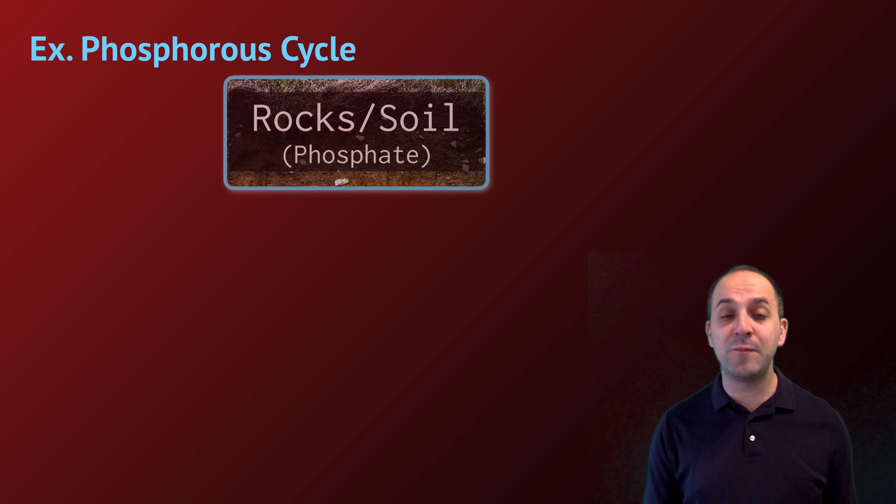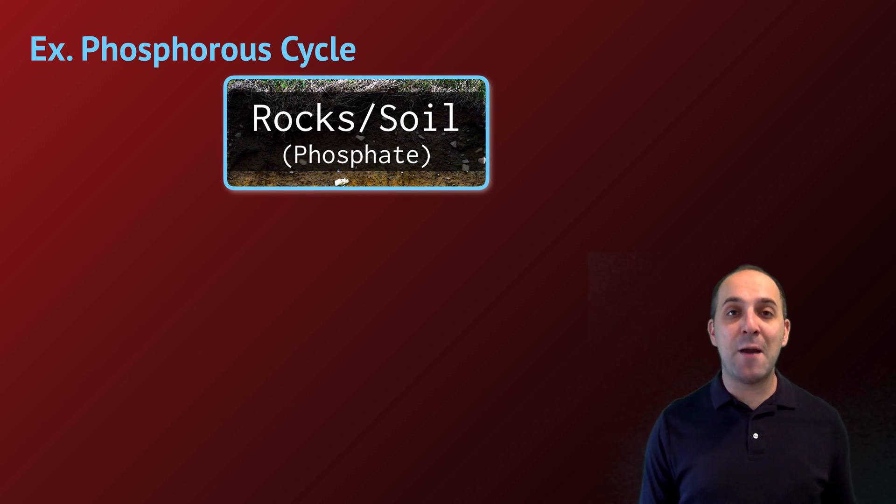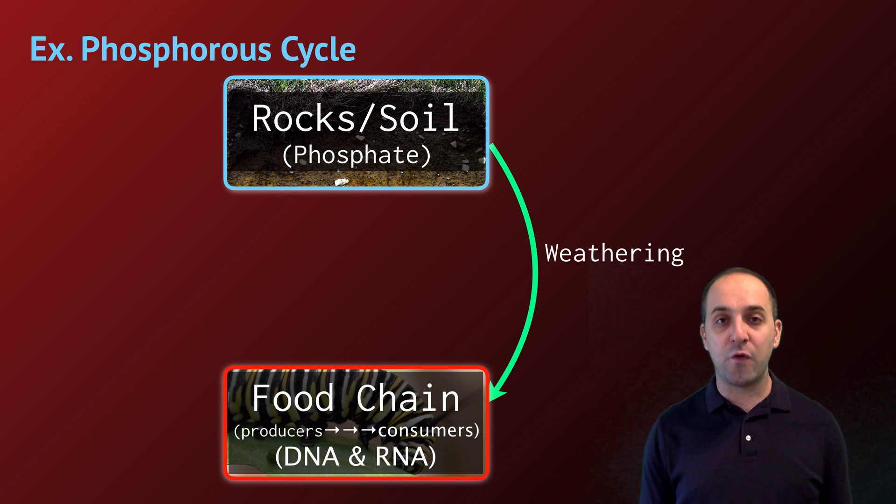And nitrogen fixation is largely accomplished through the action of nitrogen-fixing bacteria that live in the soil and live in the roots of some plants. These bacteria are able to take atmospheric nitrogen, N2, and convert it into a series of biologically useful forms of nitrogen. We're not going to get into the details of those transitions for the purpose of our understanding for this course. Once it's in the food chain, it's incorporated into biological molecules, specifically protein, DNA, and RNA.